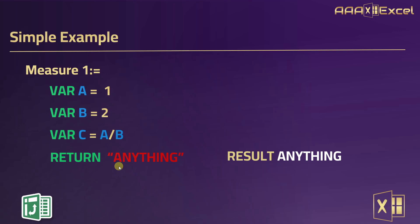I hope that was helpful to understand the structure and syntax of measures including VAR and RETURN. The RETURN should be the final part of a measure using VAR and RETURN because it decides the end result. Let's now move to Excel and look at a more advanced example — how to calculate the year-over-year change using VAR and RETURN inside a data model.